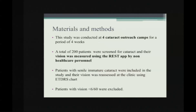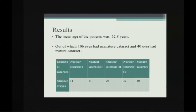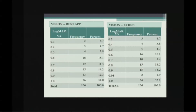This study was conducted at four outreach camps over a period of four weeks. Two hundred patients were screened. We trained non-healthcare children and volunteers to conduct the test, and then we rechecked using the ETDRS chart. Patients with vision less than 6/60 were excluded. The mean age of the patients was 52.8 years; of these, 106 eyes had immature cataract and 40 eyes had mature cataract.